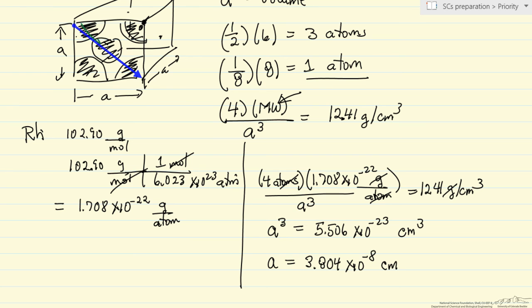If I look at the structure, I look at the diagonal. The diagonal is 1, 2, 3, 4 radiuses.